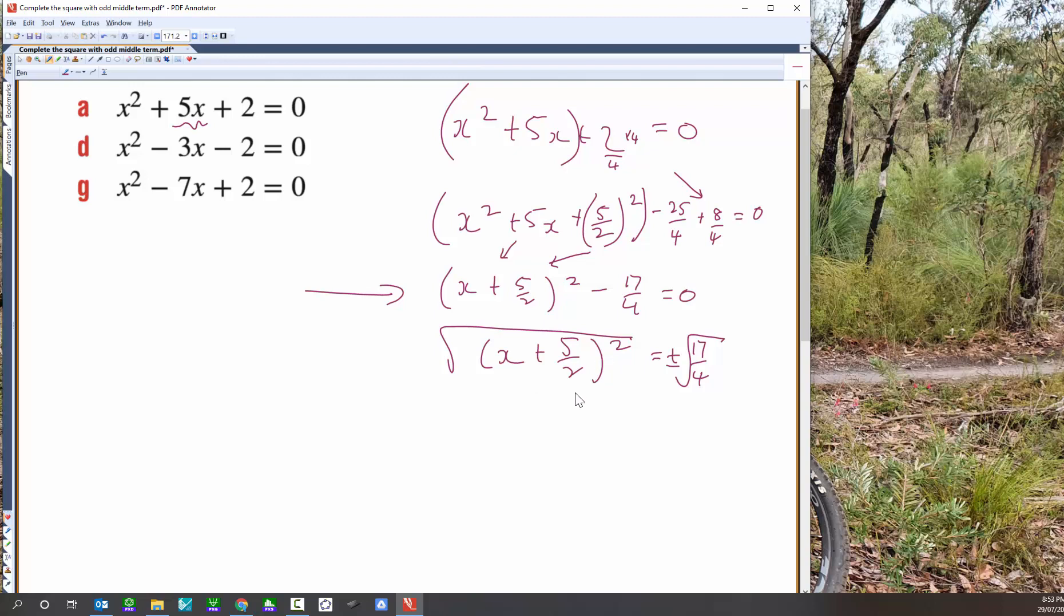All right, so now that leaves me with x plus 5 on 2 on the left-hand side, and plus or minus root 17. What I'm going to do is root the 17, which is root 17, and root the 4, which is 2. Now let's subtract 5 on 2 from both sides, and I've got plus or minus root 17 on 2 take away 5 on 2. And there are my solutions.